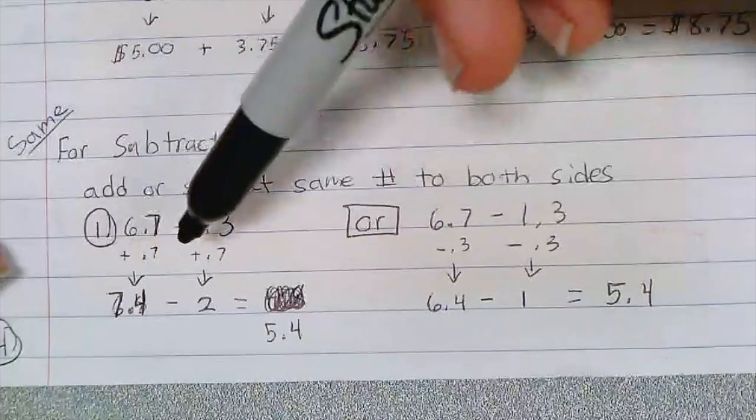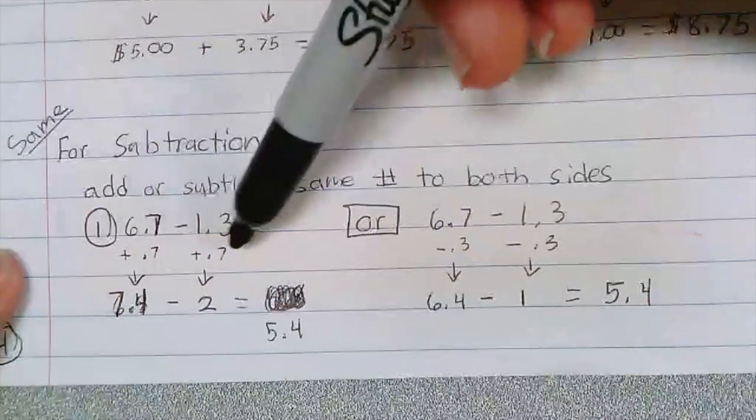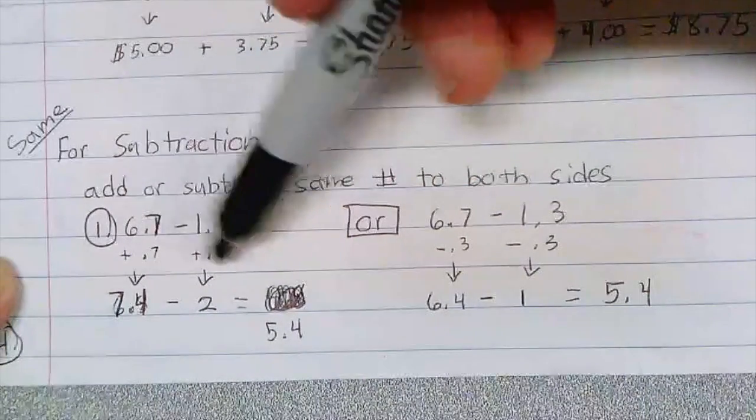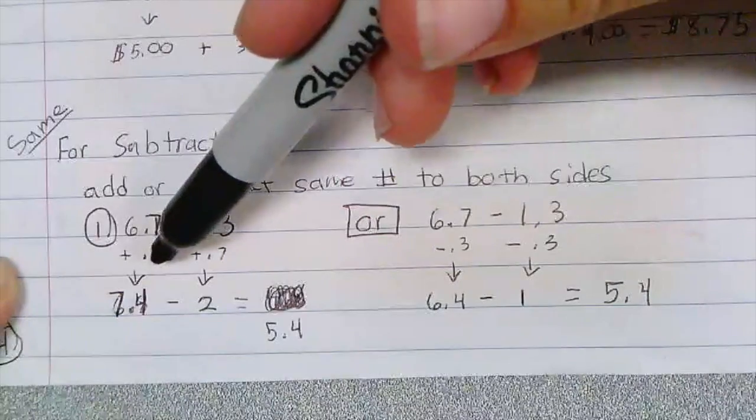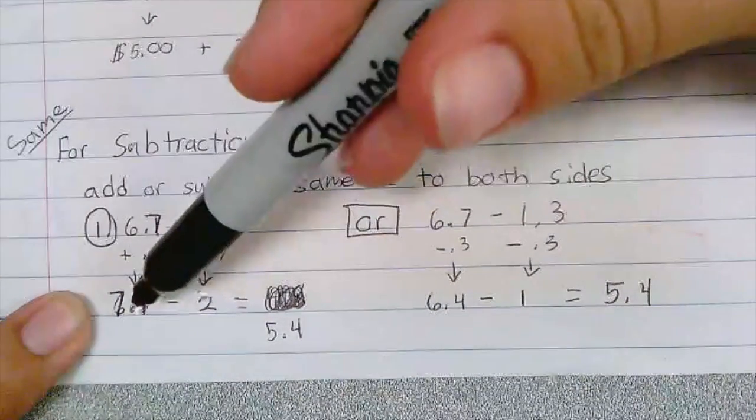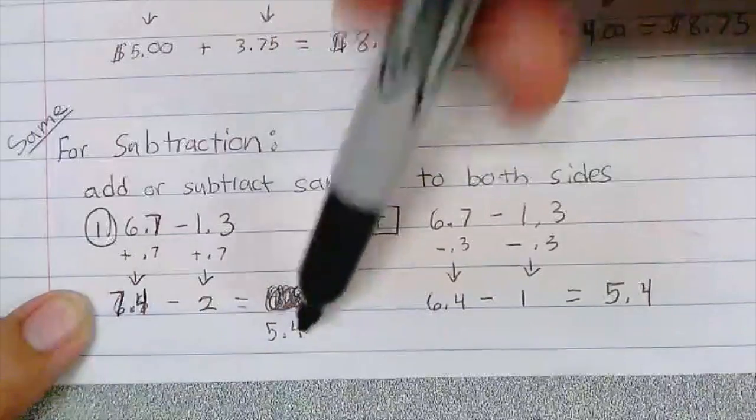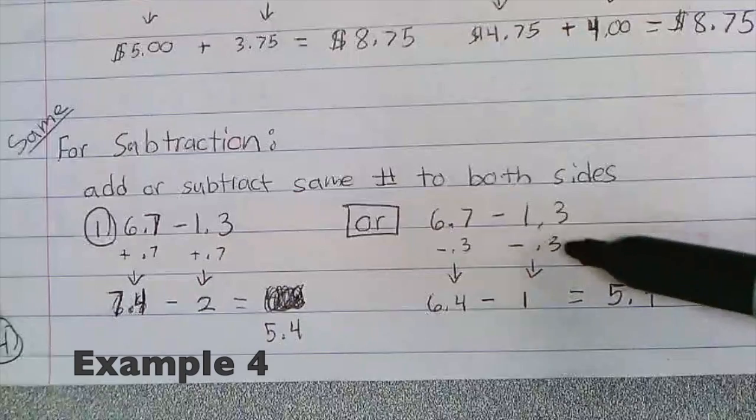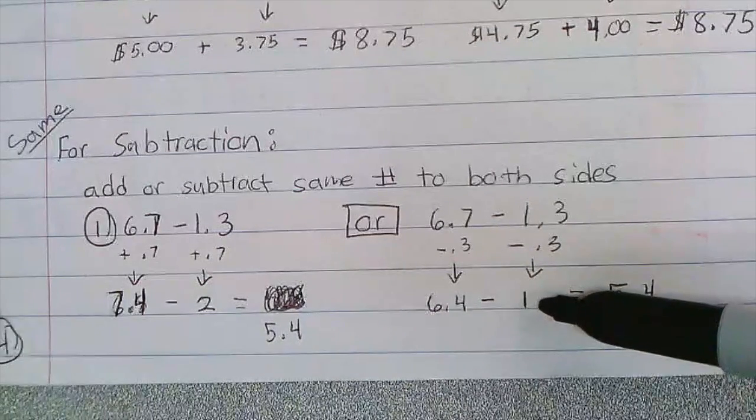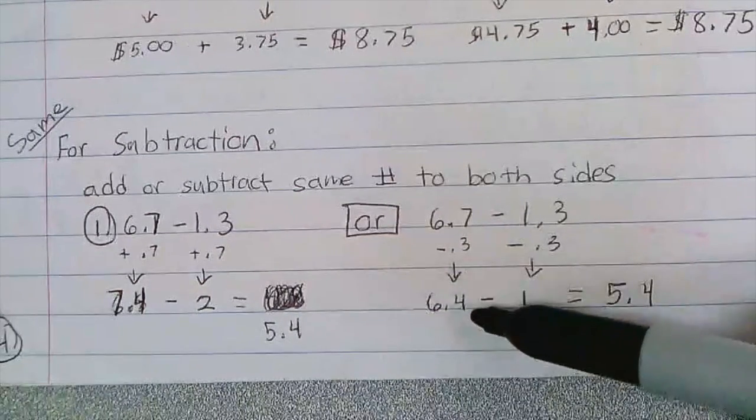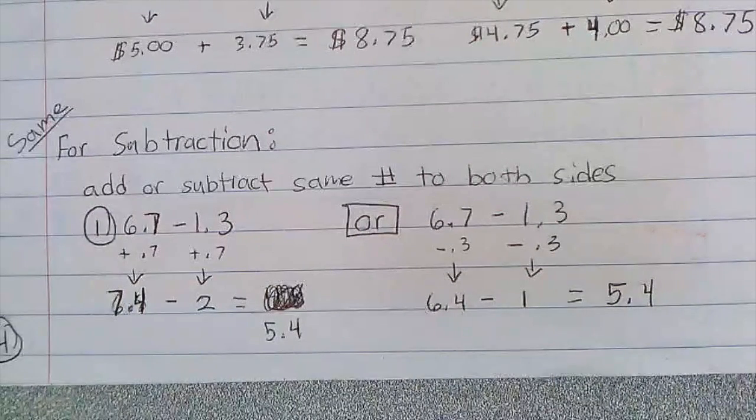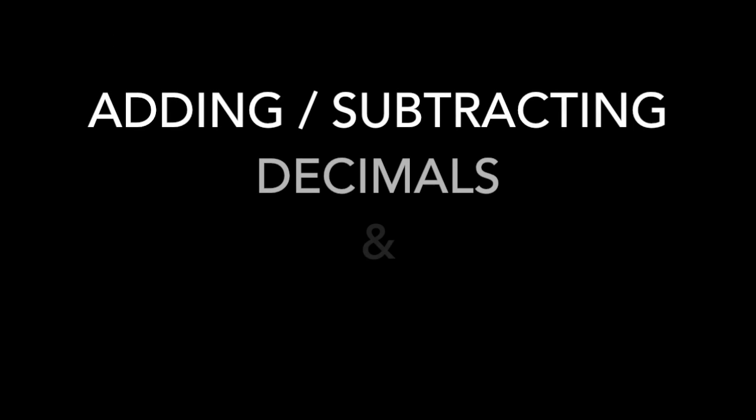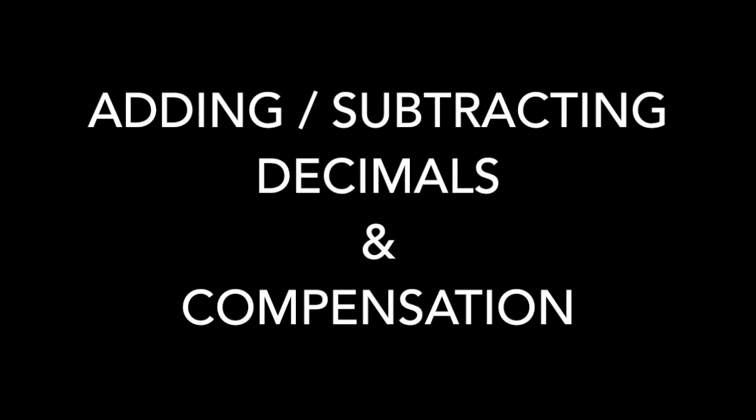6.7 minus 1.3. I'm going to add 0.7 here to bring this up to 2, and then since I added 0.7 there, I'm going to add 0.7 to this and I'll get 7.4. And then I'll do 7.4 minus 2 is 5.4. Or I could subtract 0.3 and bring this to 1, and then subtract 0.3 and bring that to 6.4, and I have 6.4 minus 1 equals 5.4.